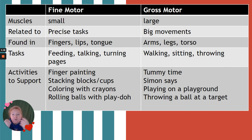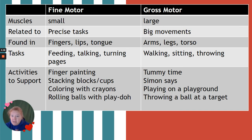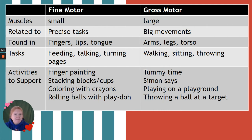Gross motor — the large muscles — involve big movements: your arms, your legs, your torso. So things like walking, sitting, throwing, running. How can you support those? Well, tummy time. Once babies can sit up, sit them up. Doing things like Simon Says, playing on a playground, throwing balls, playing sports — all gross motor skills.